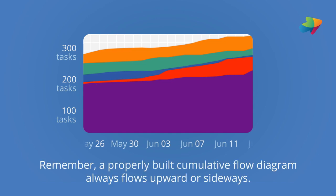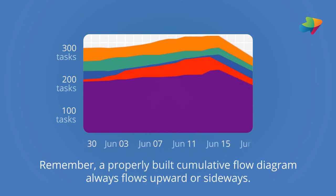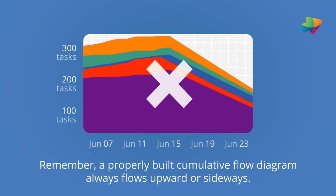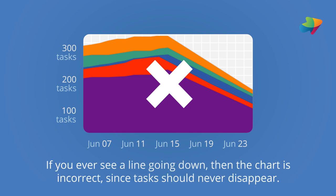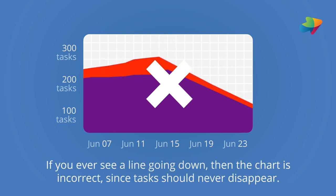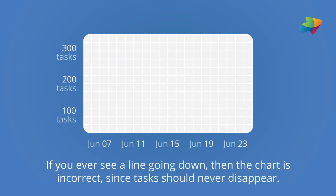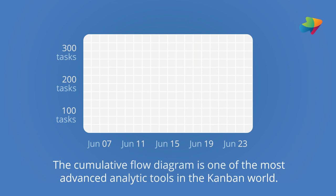Remember, a properly built cumulative flow diagram always flows upward or sideways. If you ever see a line going down, then the chart is incorrect, since tasks should never disappear.